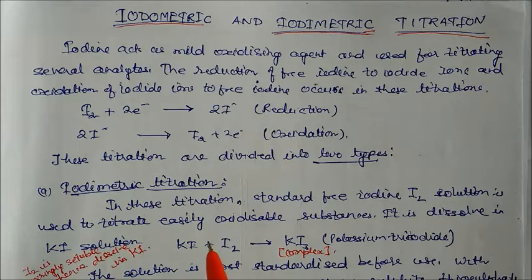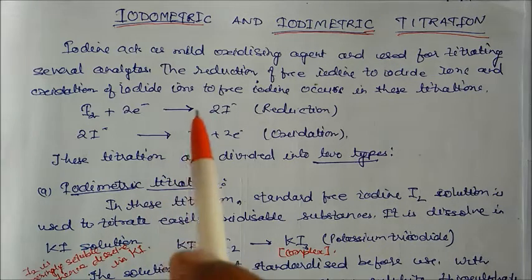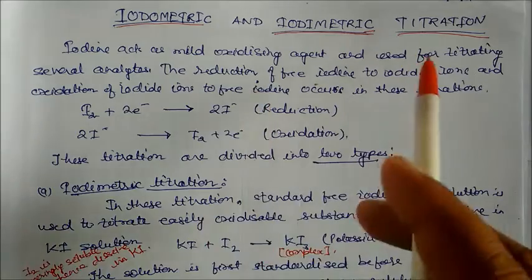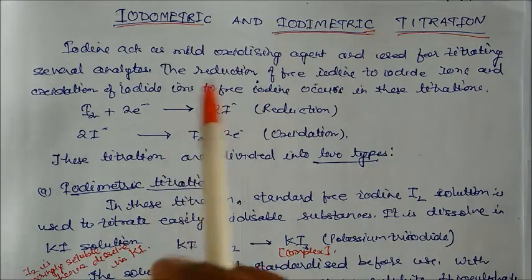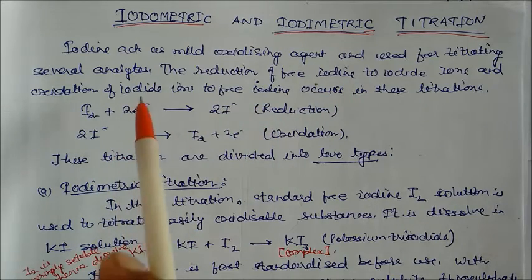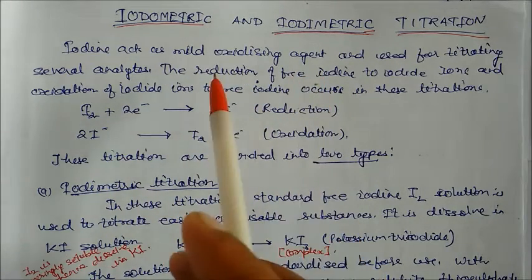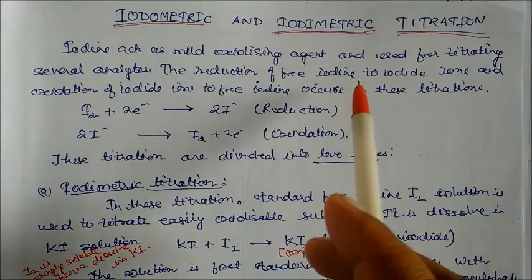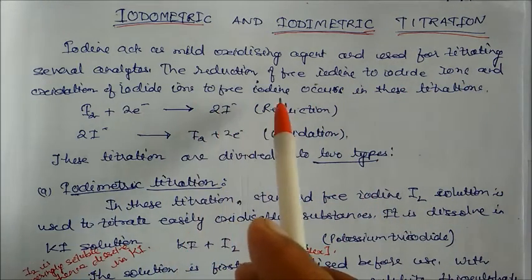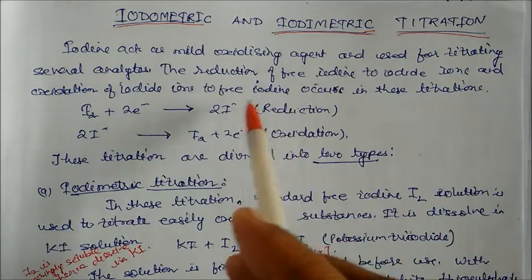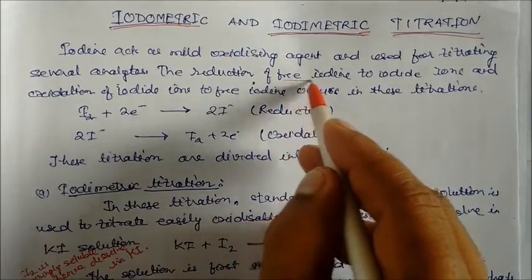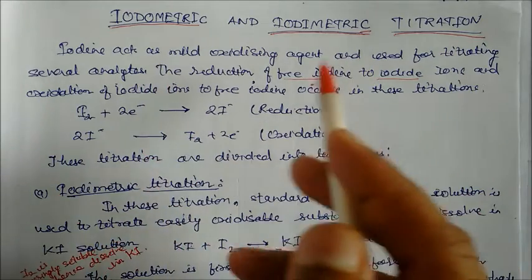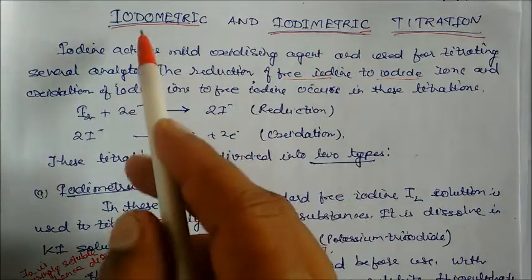Welcome to today's lecture. We are going to discuss iodometric and iodimetric titrations. Iodine is a mild oxidizing agent used for titrating several analytes. Two phenomena occur in these titrations: the reduction of free iodine to iodide ions, and the oxidation of iodide ions to free iodine.